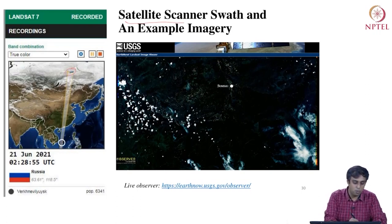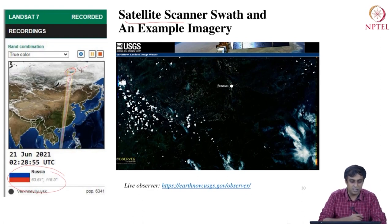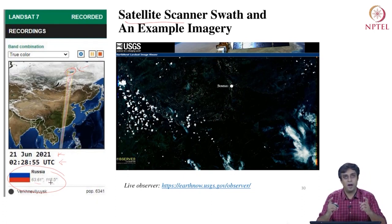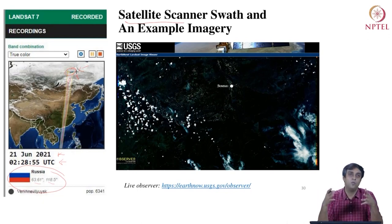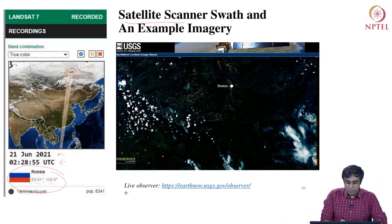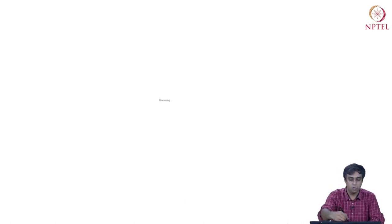This is another example giving an idea of what we call the satellite scanner swath. A satellite moves from south to north over China and Russia. At a given time on 21st June 2021 at coordinates 63.61 and 118.5, it clicks a picture. Each picture is of a certain size — for Landsat, each picture is 185 kilometers by 185 kilometers. Each picture is so huge, covering that level of area on earth. You can actually visit this live observer at earthnow.usgs.gov/observer — it's pretty fun to go over this material.